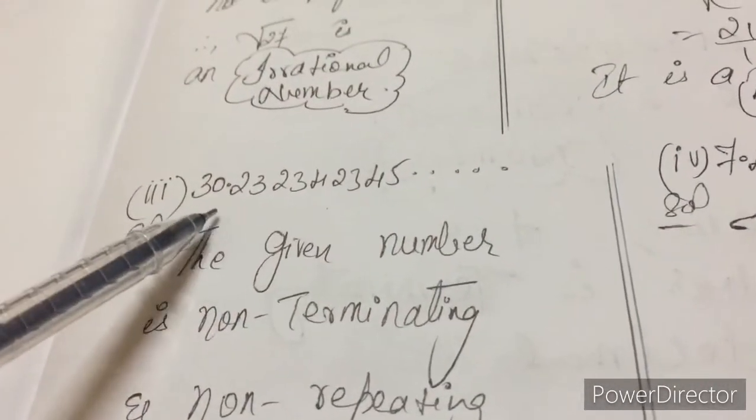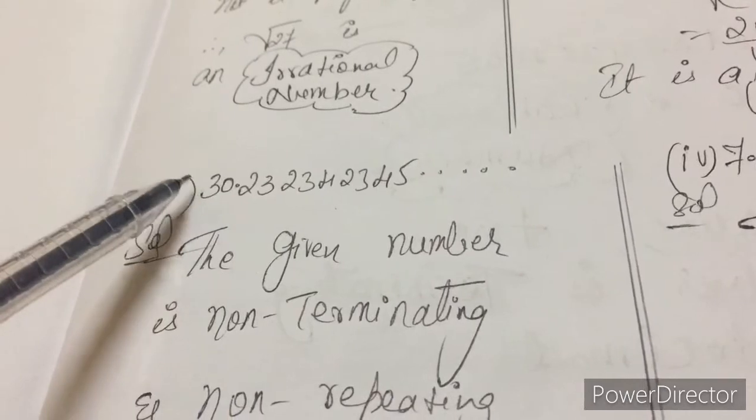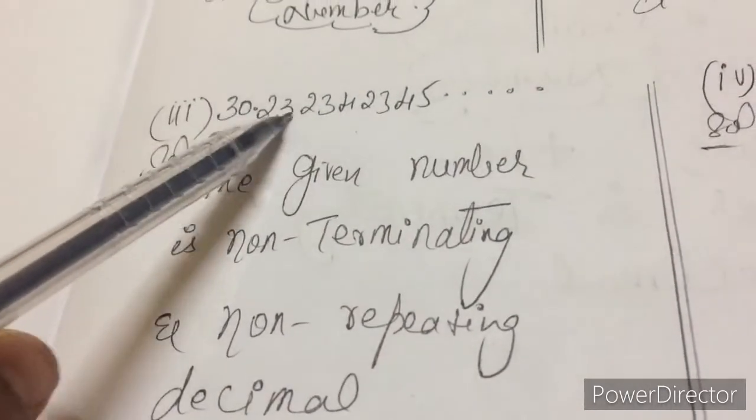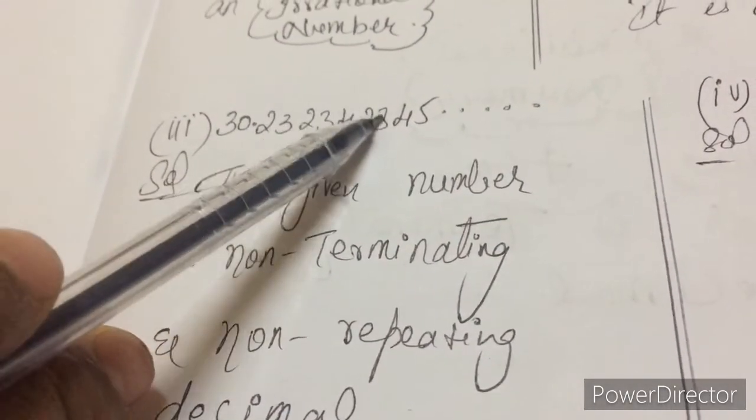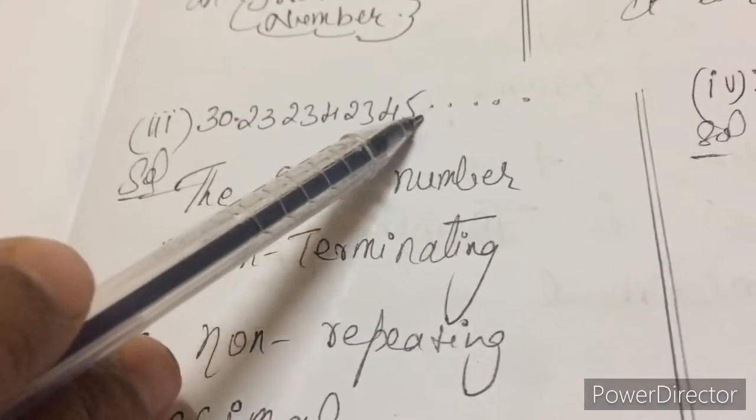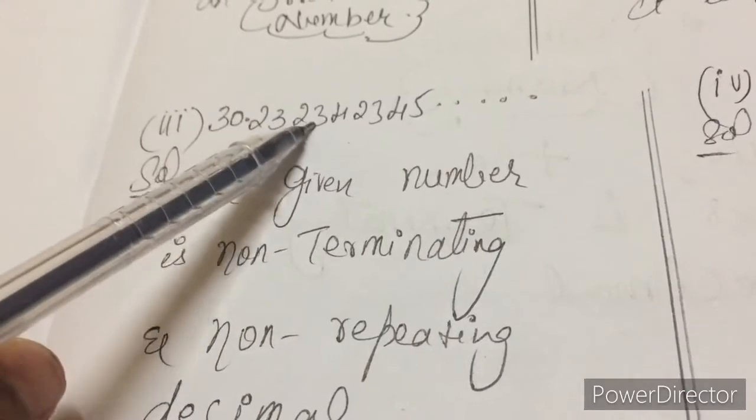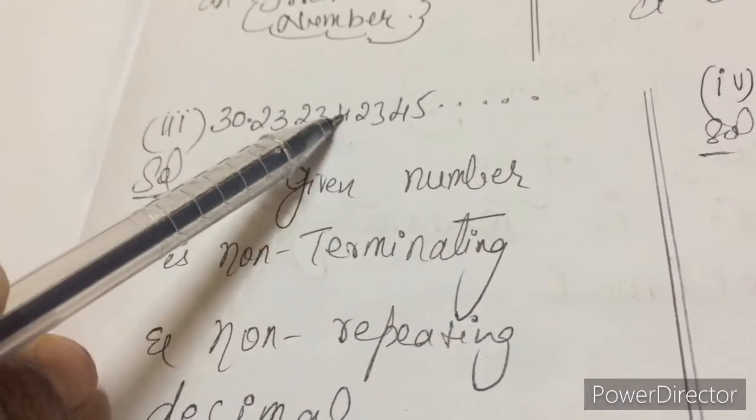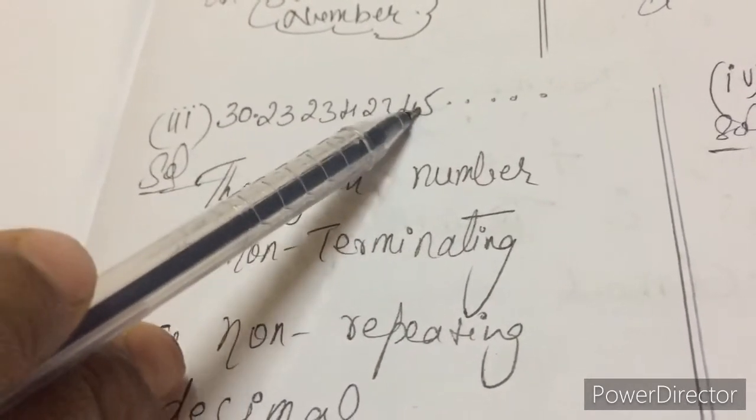Now coming to third one. Please observe the question 30.23234, 2345. Are you seeing? The number is not repeating. See, 2323 is there, then again 4 is there, then 2345 is there.